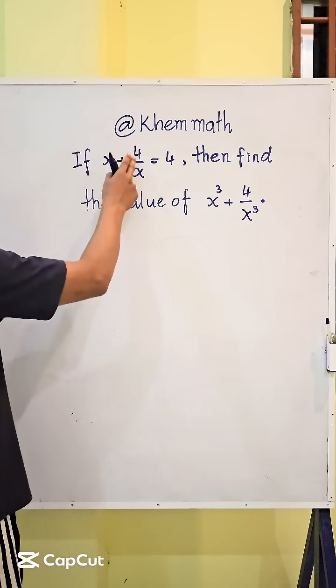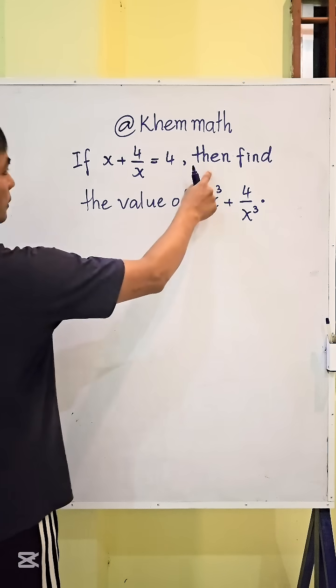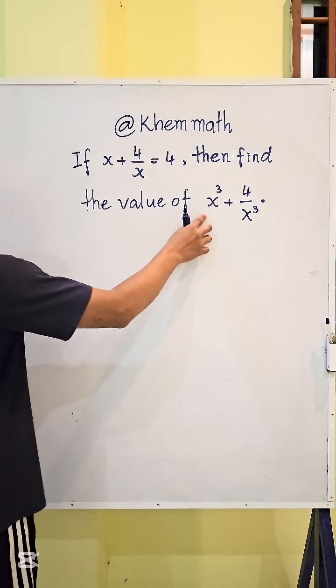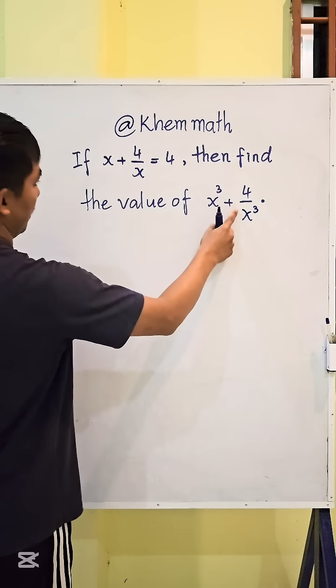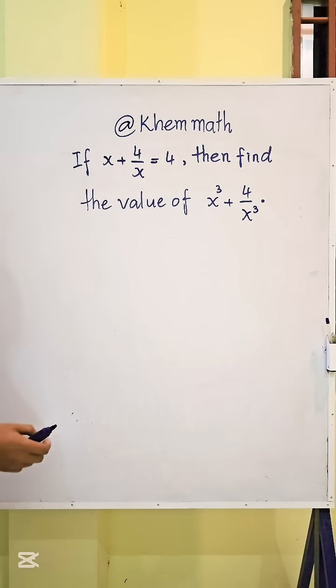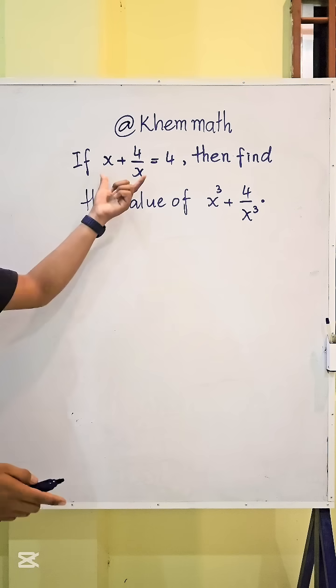If x plus 4 divided by x equals 4, then find the value of x cubed plus 4 divided by x cubed. Okay, first we use this equation.